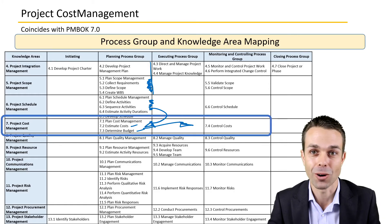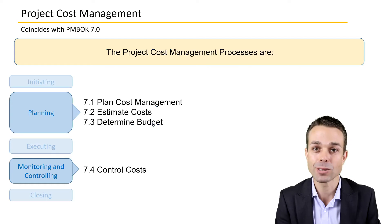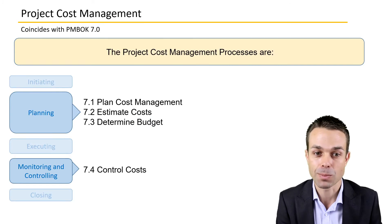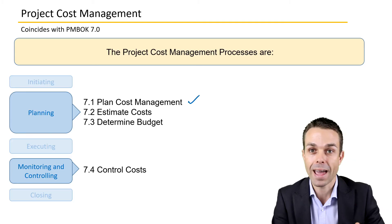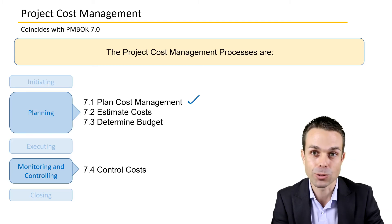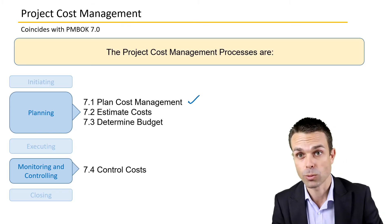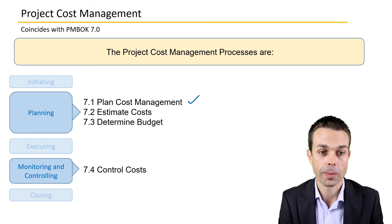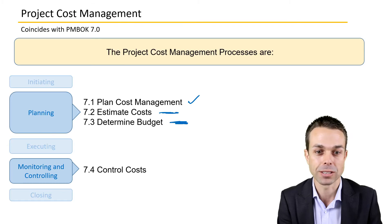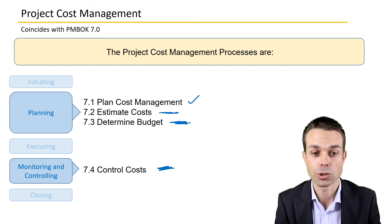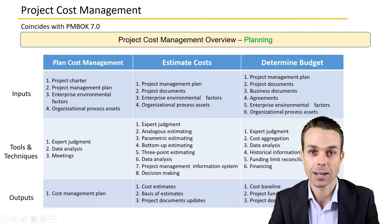The processes included in project cost management are: planning cost management — the process for how we're going to do our cost management activities, who's going to be involved, what processes we're going to use to estimate our costs and determine our budget, and ultimately what we're going to do to control the costs and ensure that they don't go too far off track.